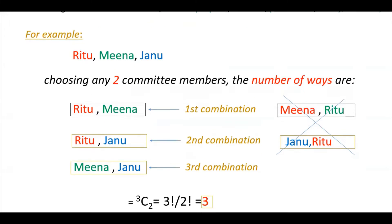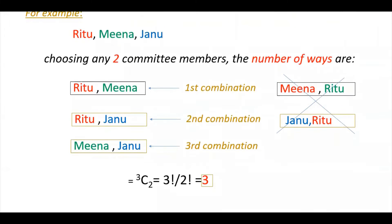So that is 3C2. Out of 3 girls, you have to select 2 committee members. 3C2 equals 3 factorial divided by 2 factorial into 1 factorial. So here it is 3. There are 3 combinations only.